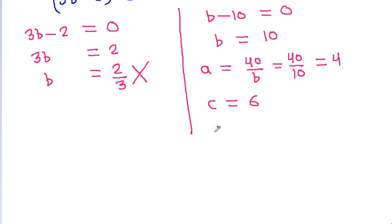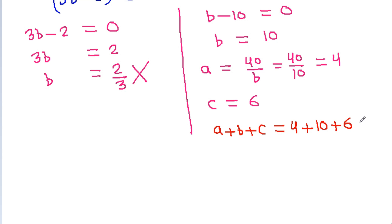So A plus B plus C will be equal to A is 4 plus B is 10 plus C is 6, and it is 20.